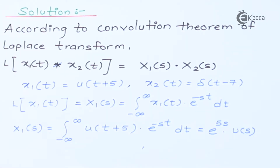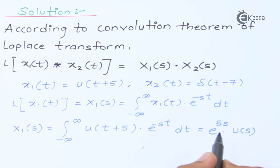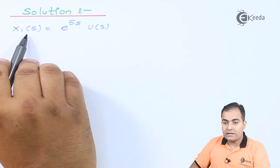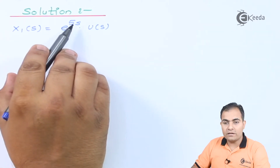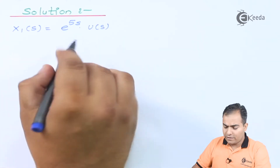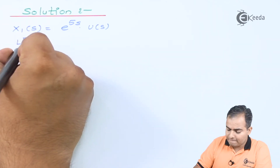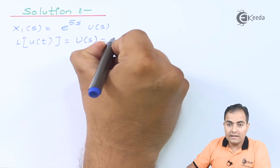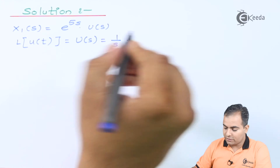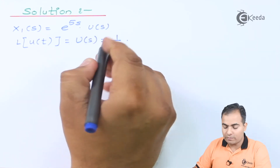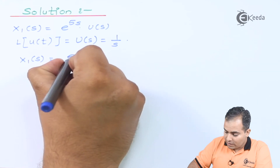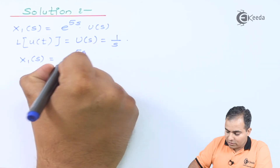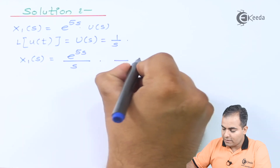We know that the Laplace transform of u(t) is U(s) = 1/s. So substituting, X1(s) = e^(5s) / s. This is part number one of our solution.